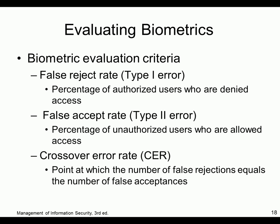False reject rate is the percentage of authorized users who are denied. False acceptance rate is the percentage of unauthorized users who are allowed. Which is more important? I would not want false acceptance — it would be okay to have false rejects, but I definitely would not want false acceptance.